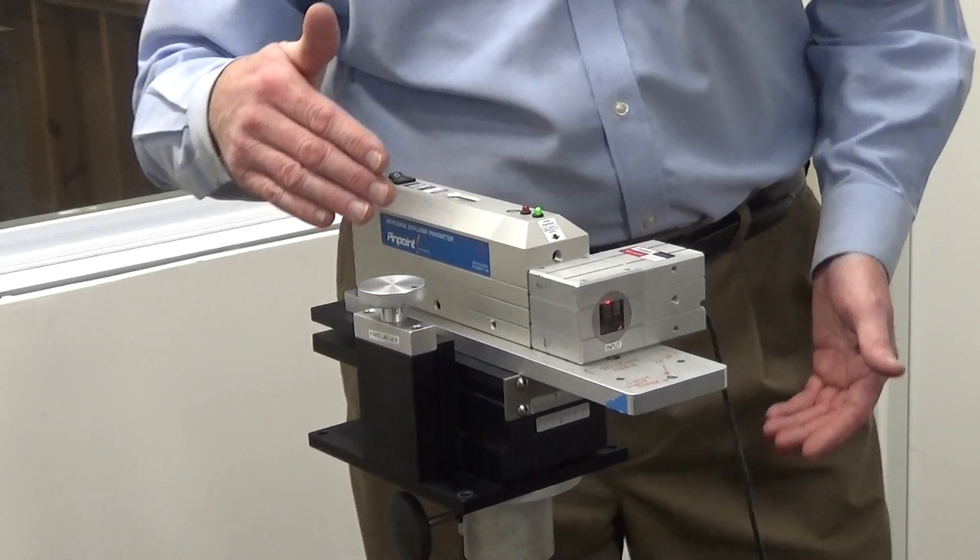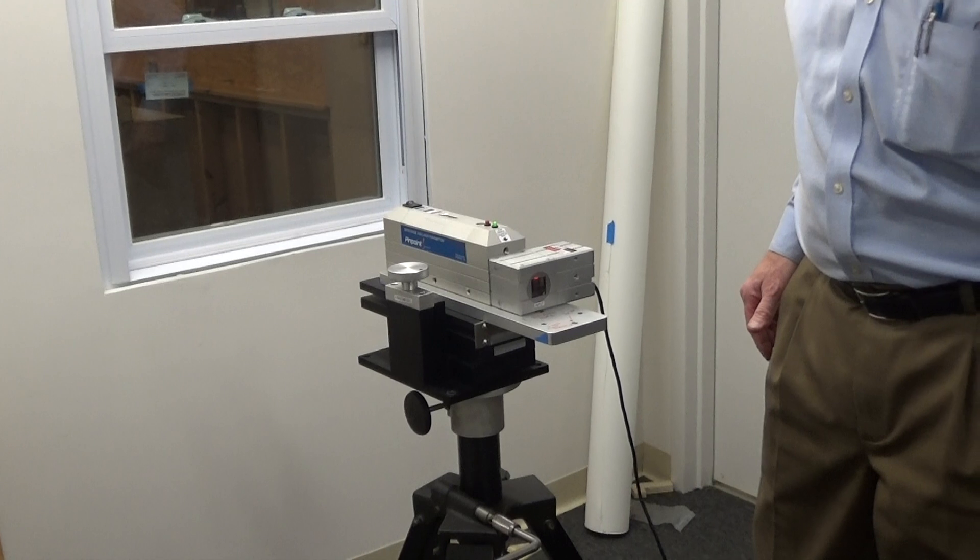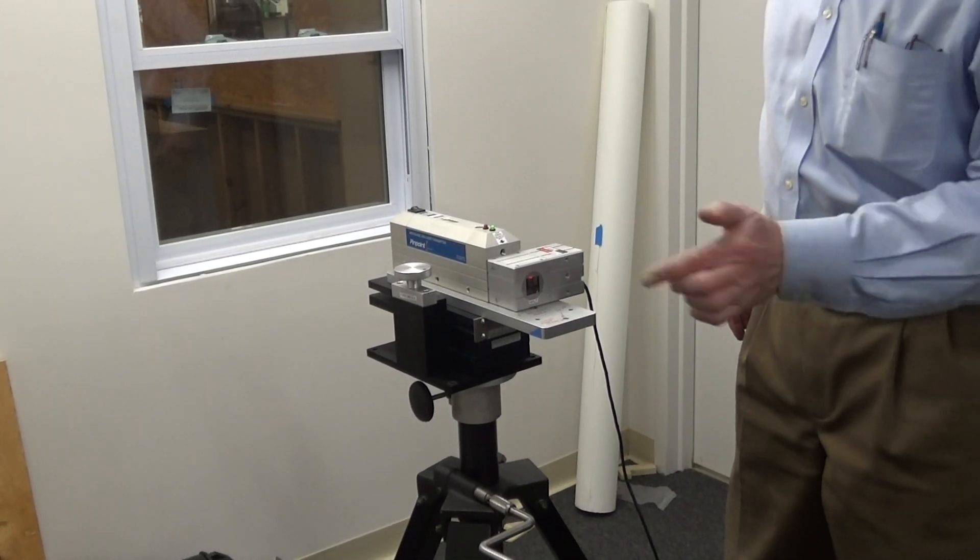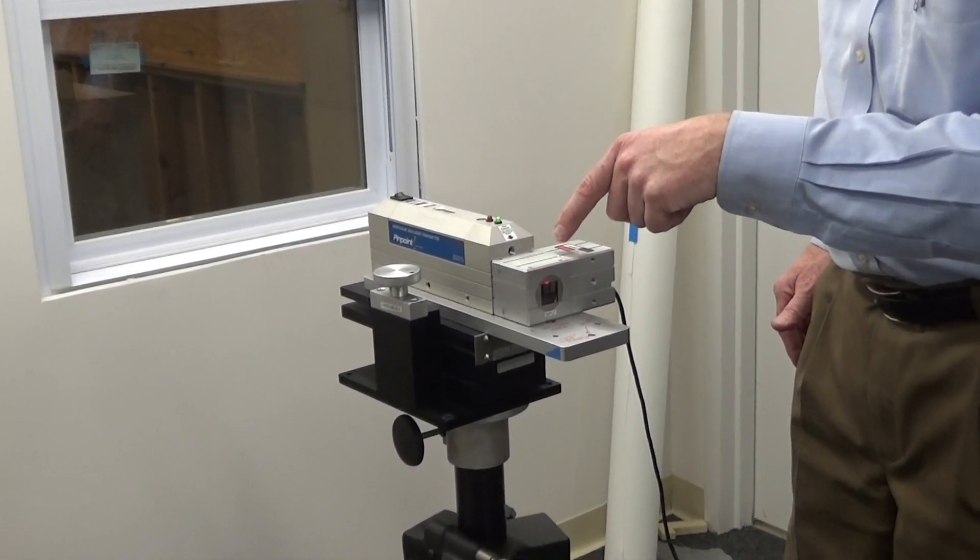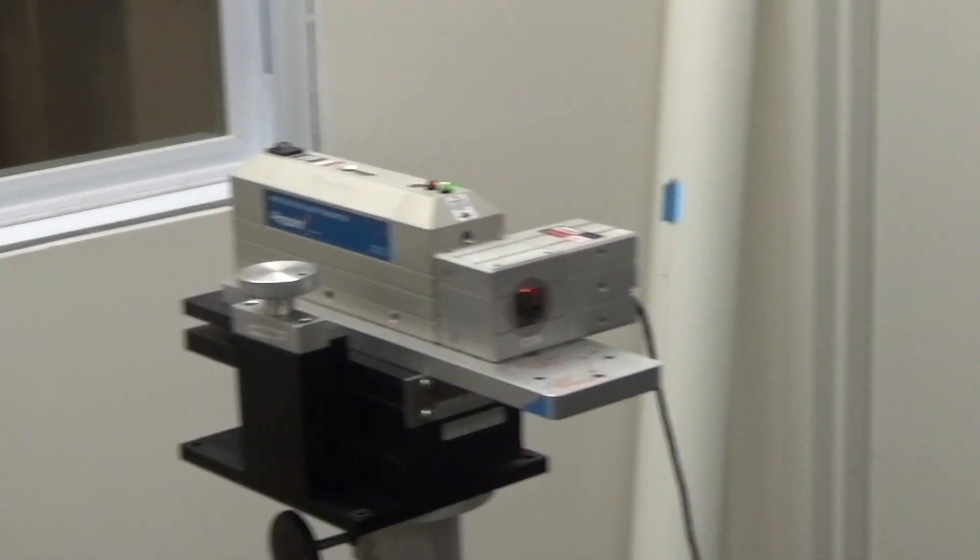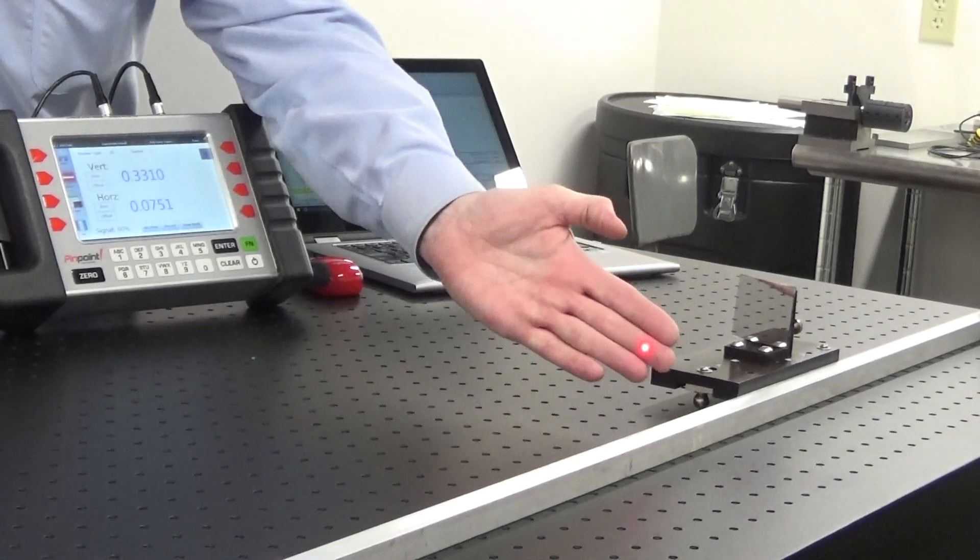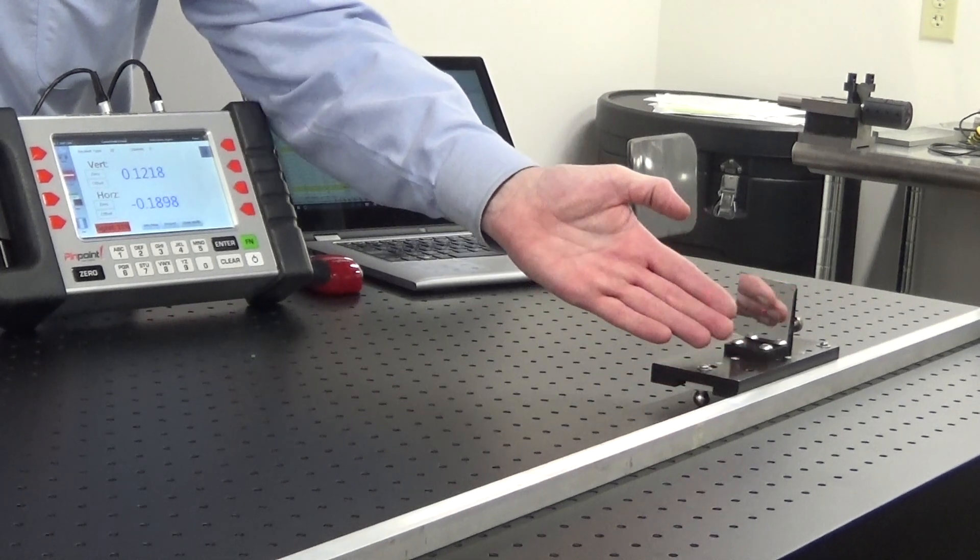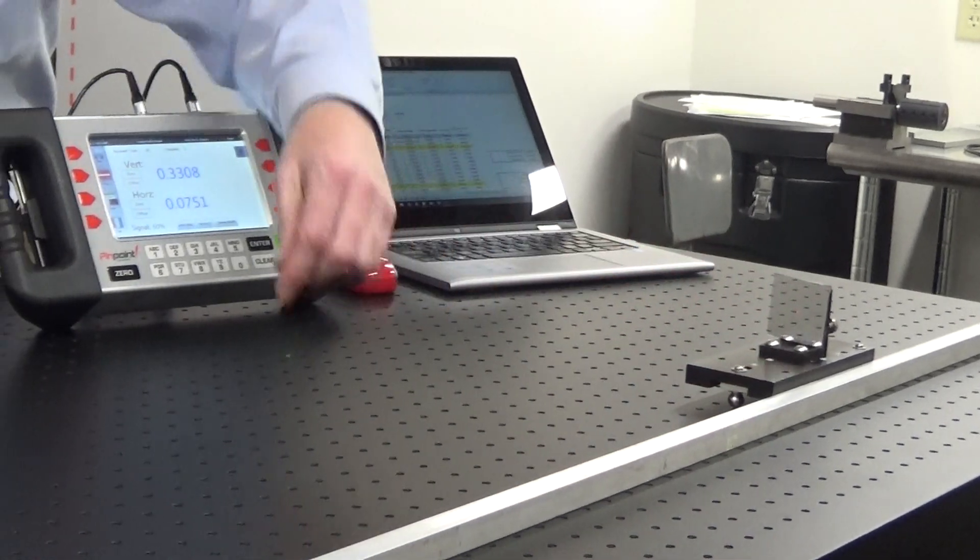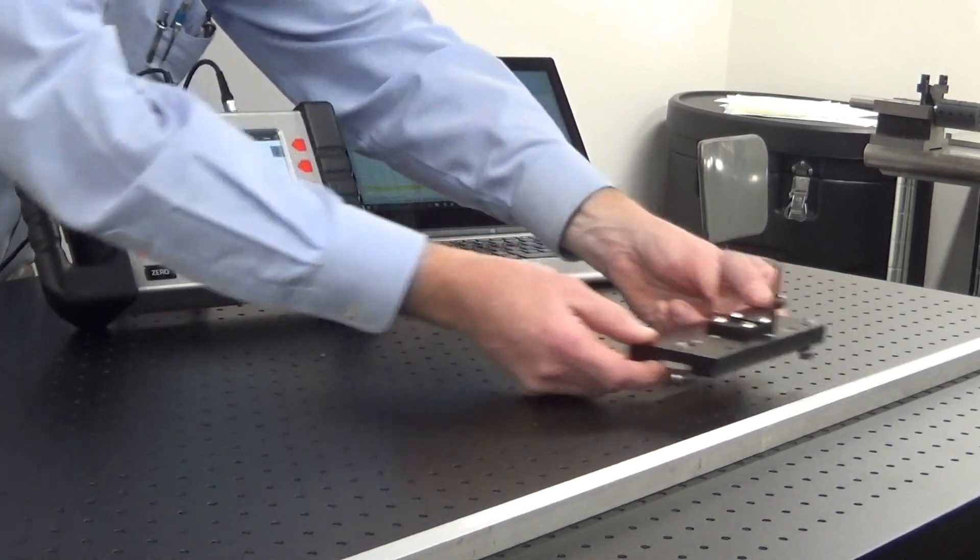What this does is it allows the laser beam to go out and bounce off of a mirror, which we'll talk about in a second, and then come back into this receiver for the measurement process. If we move over here, the second part of the system is a mirror assembly. It's bringing the laser beam, folding it back, and sending it back to that receiver we talked about just a moment ago.